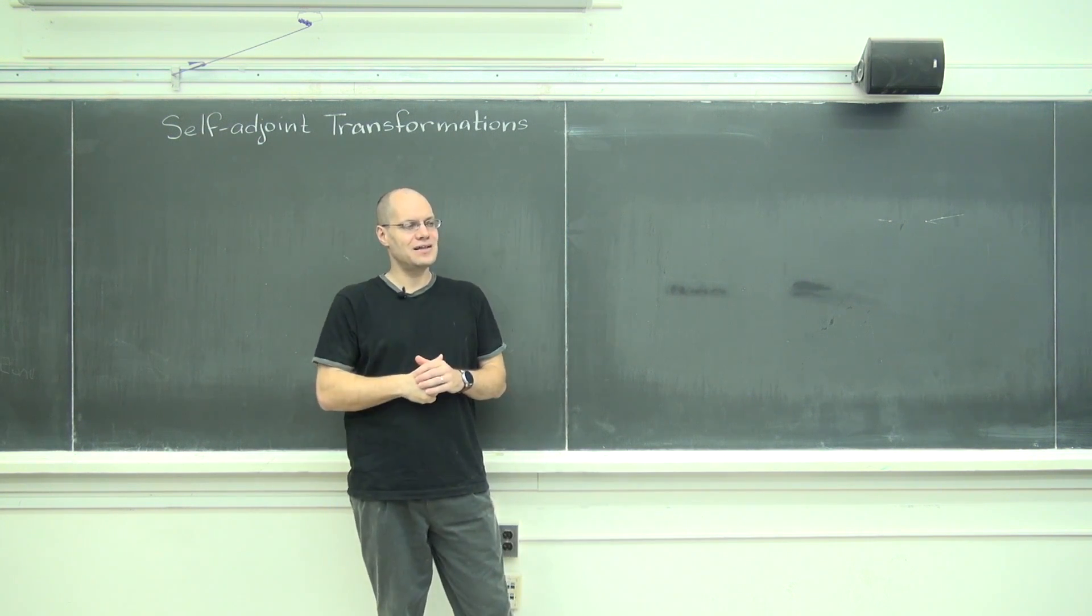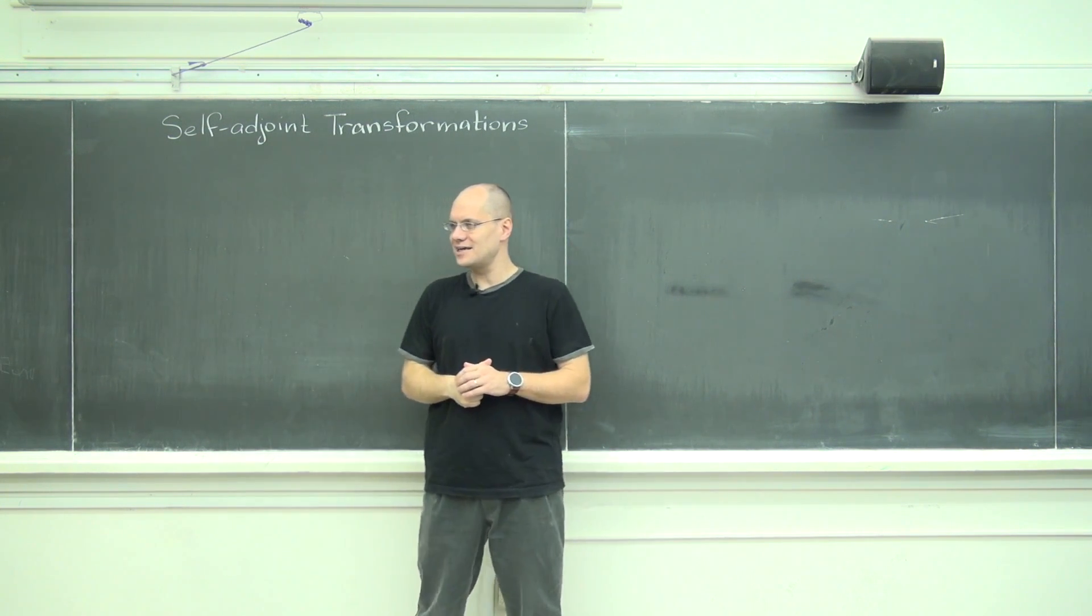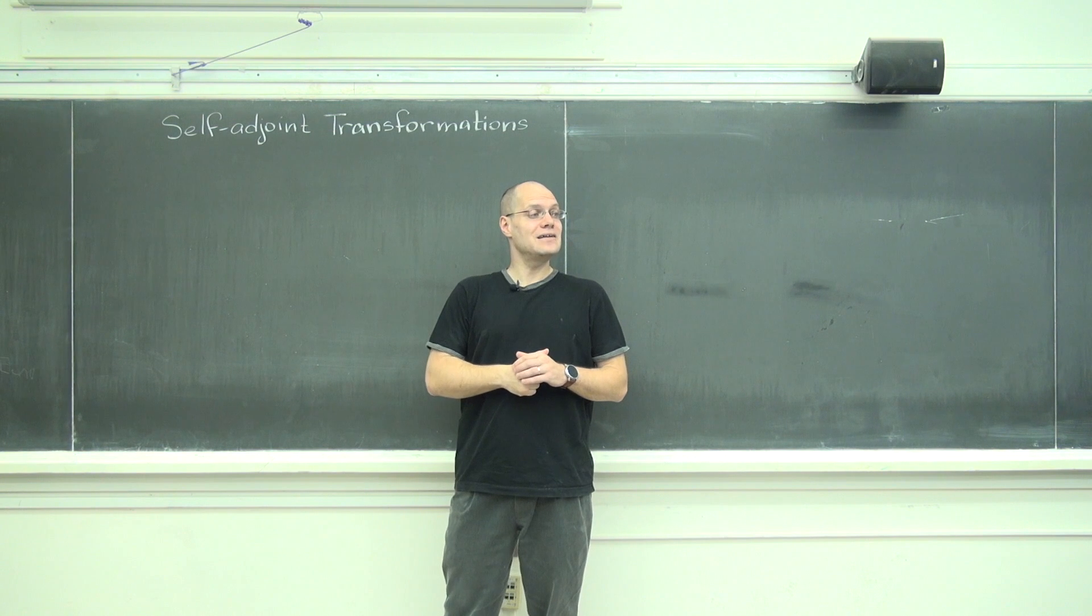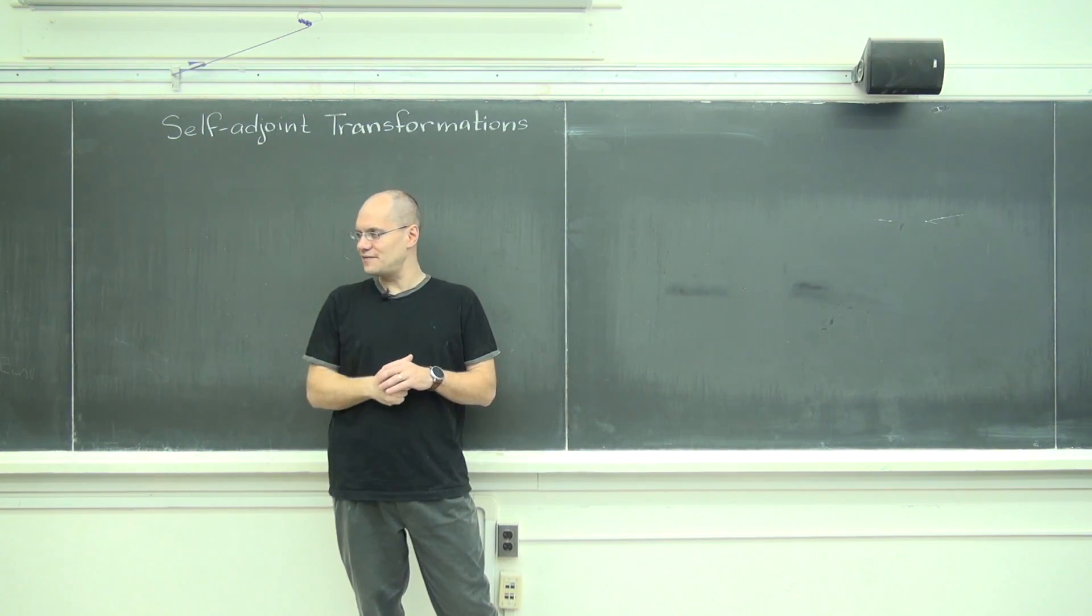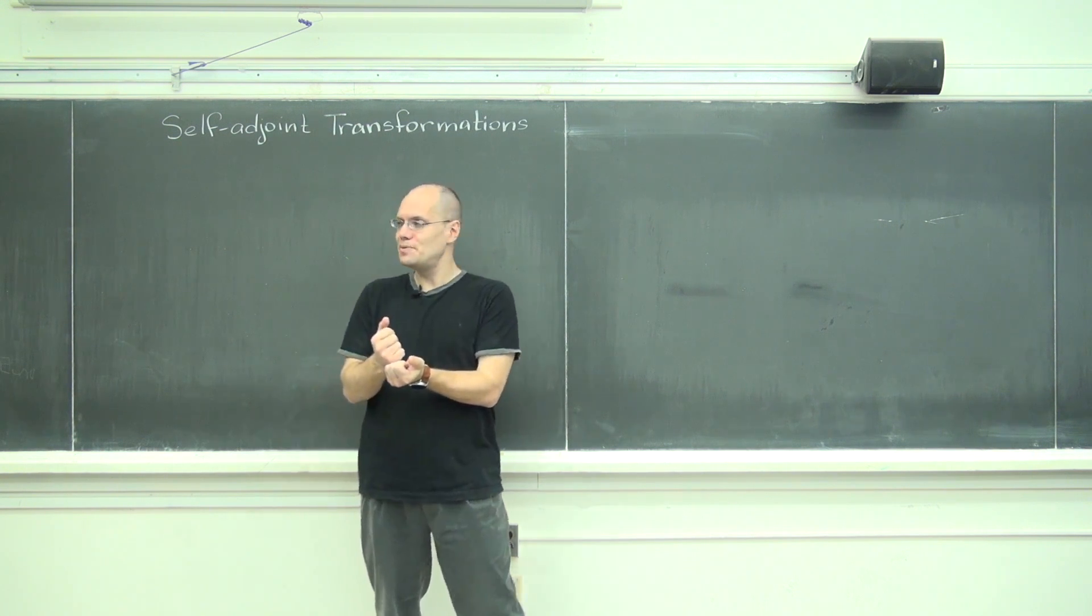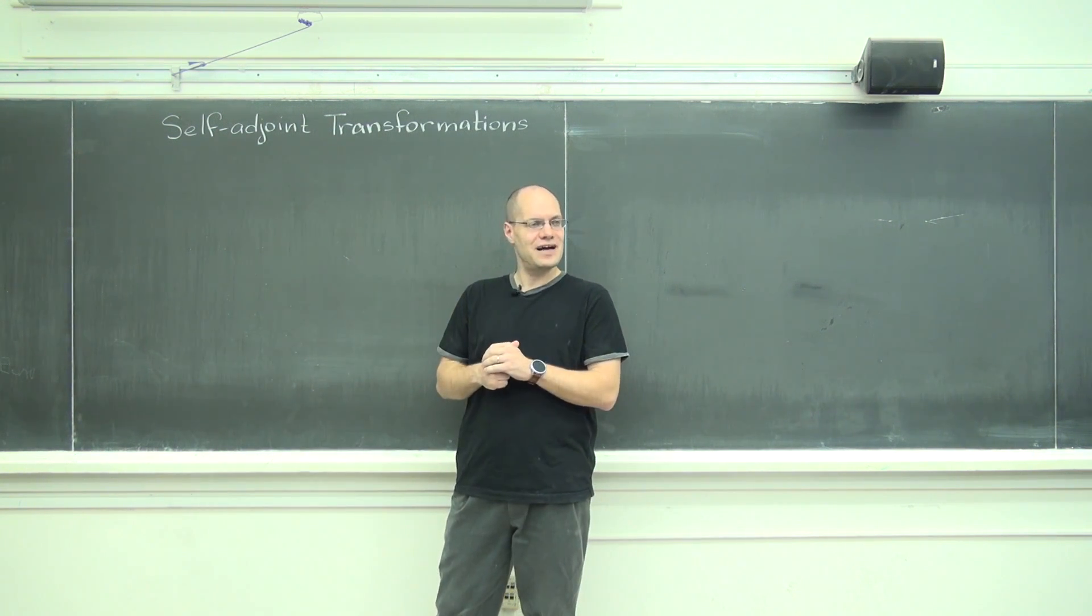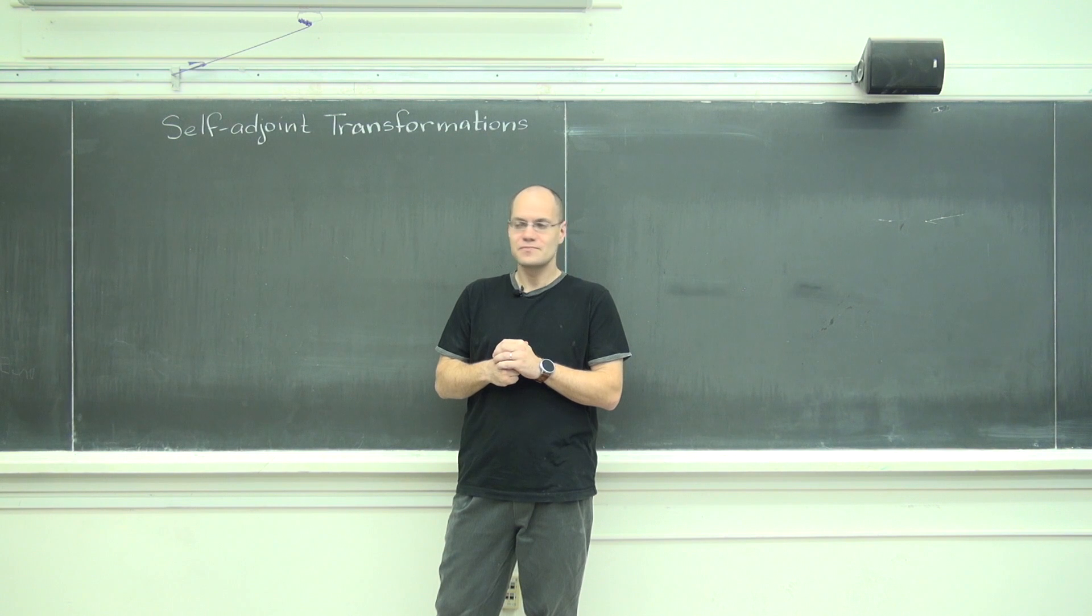You will always have a complete set of eigenvalues. In an n-dimensional, for an n by n matrix you will have n eigenvalues and n corresponding eigenvectors. Those eigenvectors will be either already orthogonal if they correspond to eigenvalues that are distinct, or they can be chosen to be orthogonal if those eigenvalues are identical.